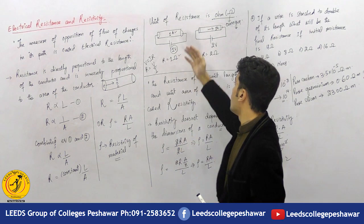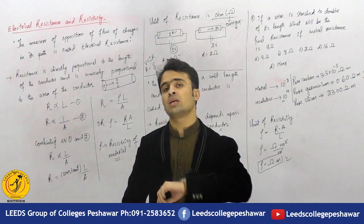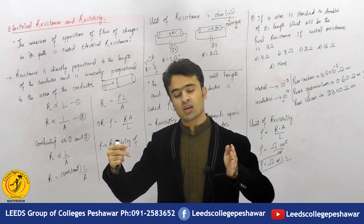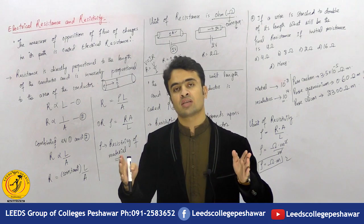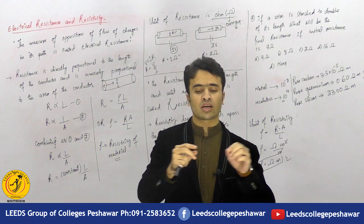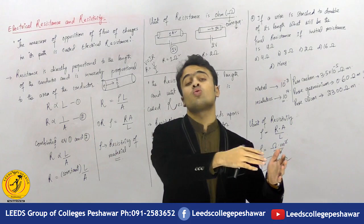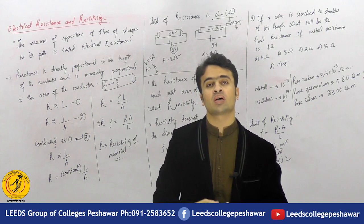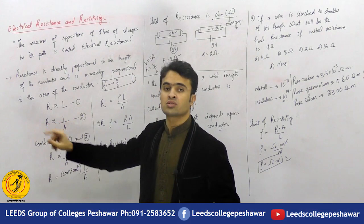The resistance of a conductor mainly depends on two factors: the first one is the length and the second one is the cross-sectional area. If the length is greater, more collisions occur, so resistance increases. If the area is larger, fewer collisions occur, so resistance decreases.